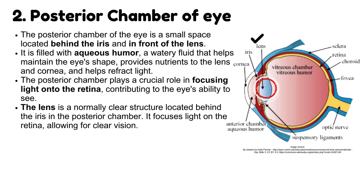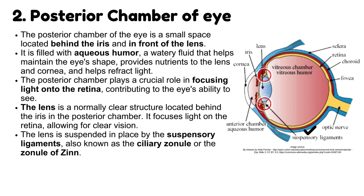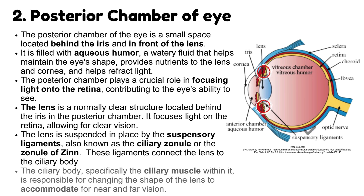The lens is a normally clear structure located behind the iris in the posterior chamber. It focuses light on the retina, allowing for clear vision. The lens is suspended in place by the suspensory ligaments, also known as the ciliary zonule, or the zonule of Zinn. These ligaments connect the lens to the ciliary body. The ciliary body, specifically the ciliary muscle within it, is responsible for changing the shape of the lens to accommodate for near and far vision.